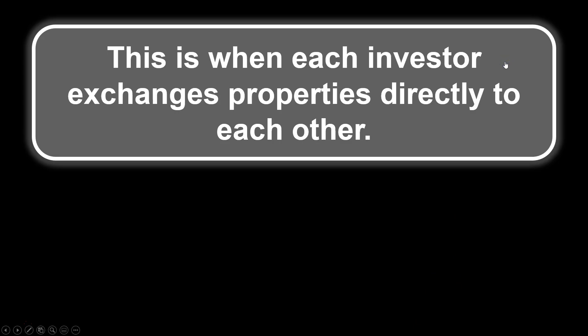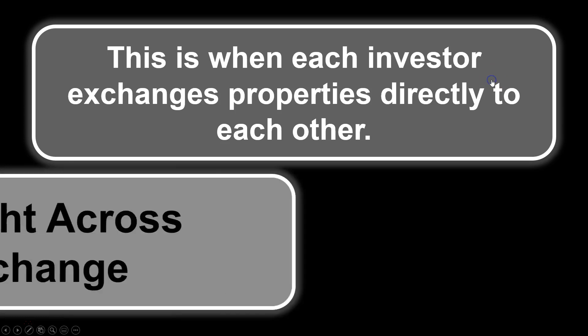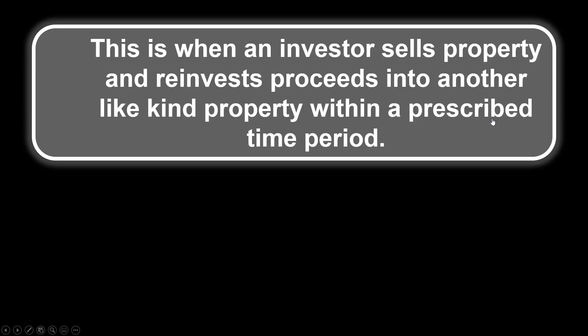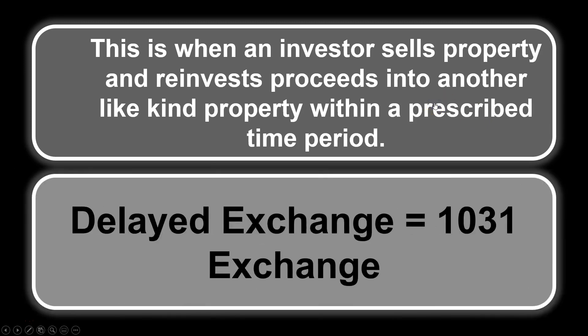This is when each investor exchanges properties directly with each other — we call that a straight exchange. This is when an investor sells a property and reinvests the proceeds into another like-kind property within a prescribed time period. Instead of a straight exchange, the investor sells the property and then finds a like-kind property afterward within a prescribed time. This is called a delayed exchange. The tax code for this is 1031, so a 1031 exchange. Delayed exchange and 1031 exchange are synonymous for state exam purposes when dealing with real property.